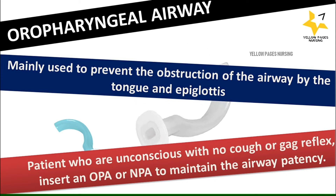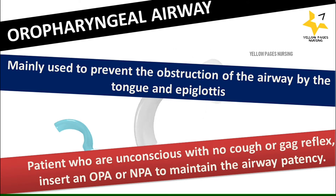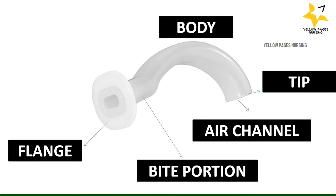Patients who are unconscious with no cough or gag reflex require insertion of an OPA or NPA — oropharyngeal airway or nasopharyngeal airway — to maintain airway patency. The parts of the oropharyngeal airway include: the flange, which rests against the lips. This design protects against aspiration into the airway.